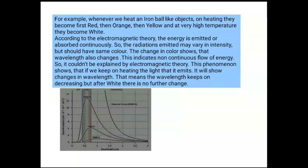For example, when we heat an iron ball-like object, on heating, first of all it becomes red, then it becomes orange, then becomes yellow, and at very high temperature it becomes white. The color changes from red to orange, orange to yellow, yellow to white, and at very high temperature it becomes blue. These observations are not in agreement with the wave theory of radiations.